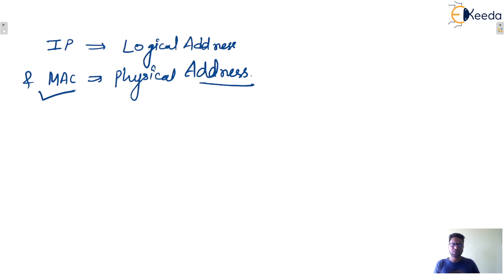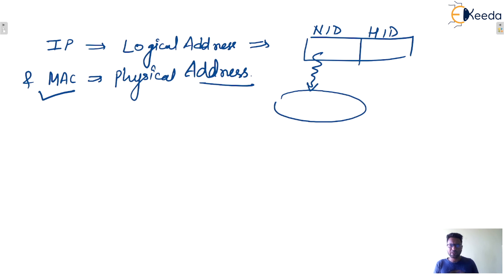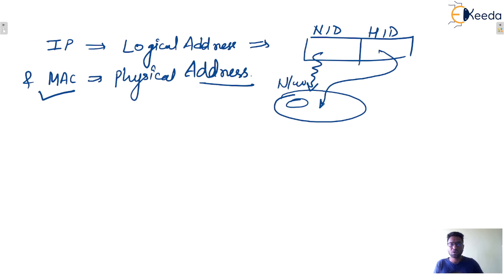IP address contains two fields: network ID and host ID. With the help of network ID, the required network is identified, and with the help of host ID, any host inside that network is identified. That's why IP address is used as a logical address.